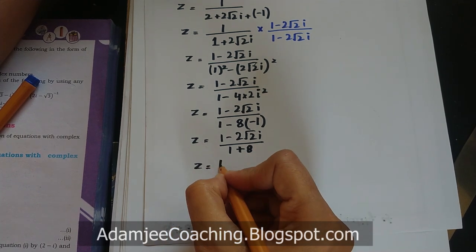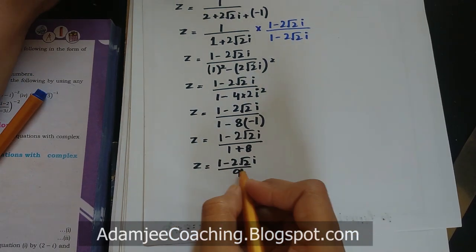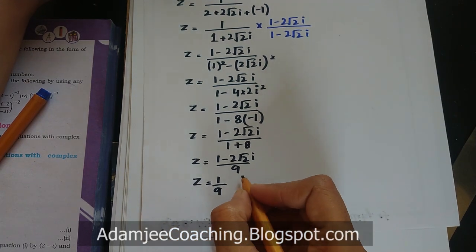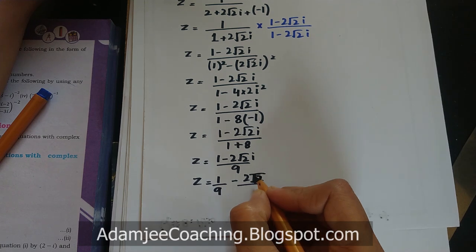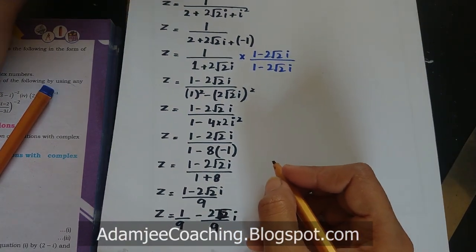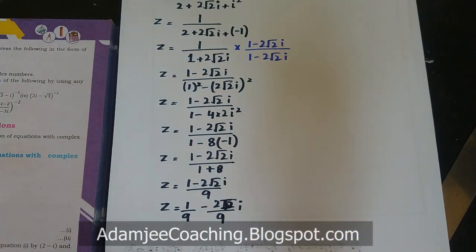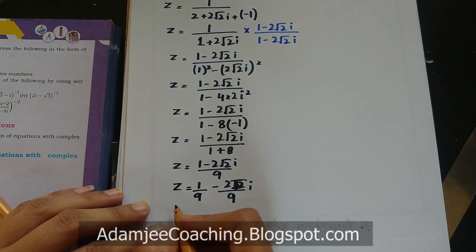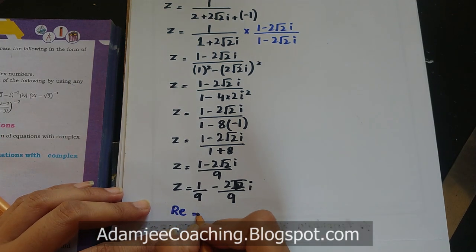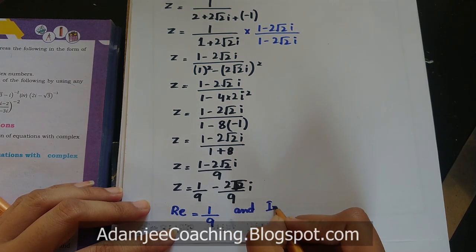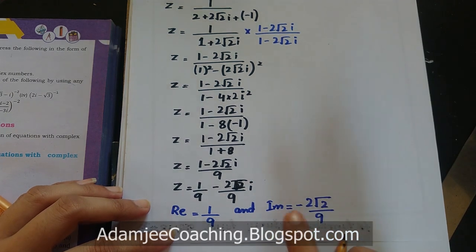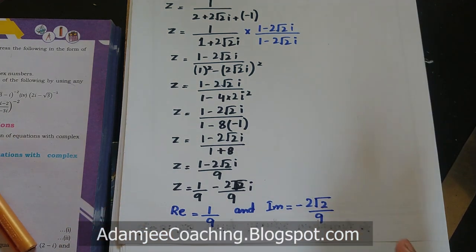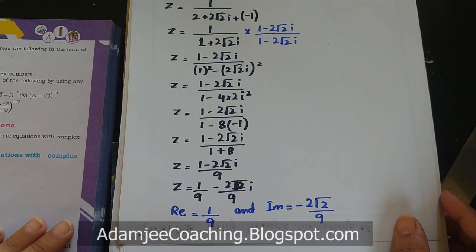مزید simplify کریں تو z = (1 - 2√2·iota) / 9۔ دونوں کو الگ کریں: z = 1/9 - (2√2/9)·iota۔ تو Real part Re = 1/9 اور Imaginary part Im = -2√2/9۔ یہ تھا part one of question number 8۔